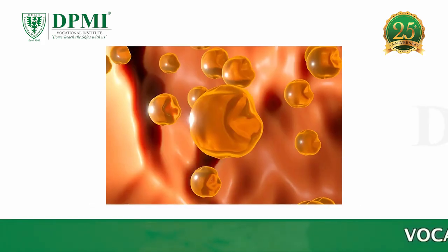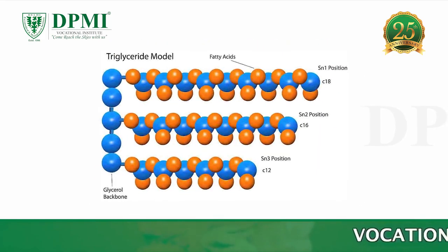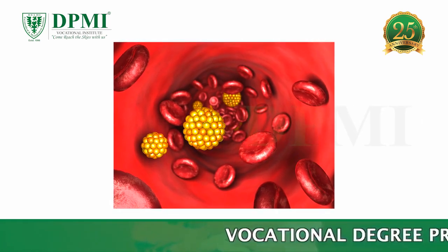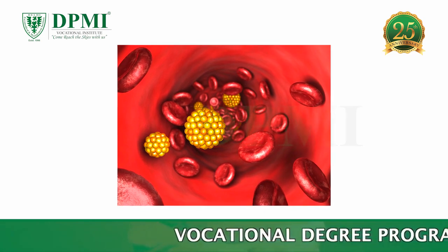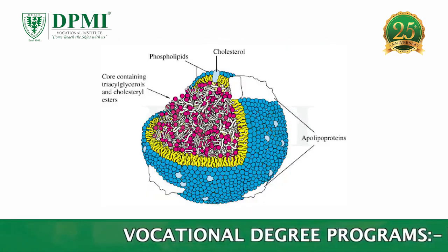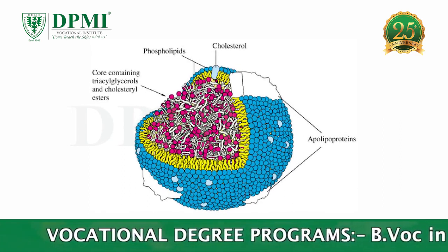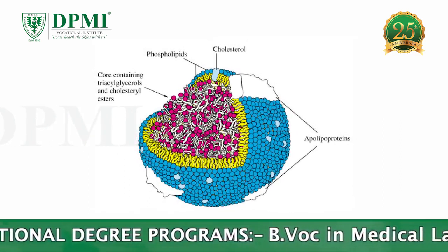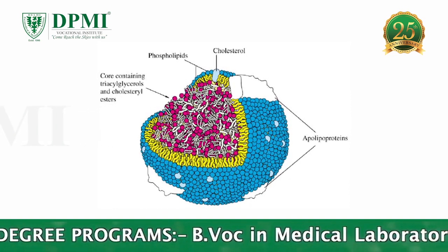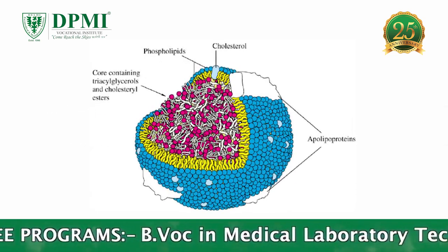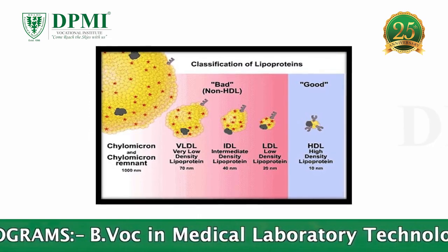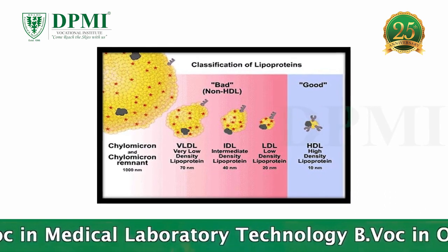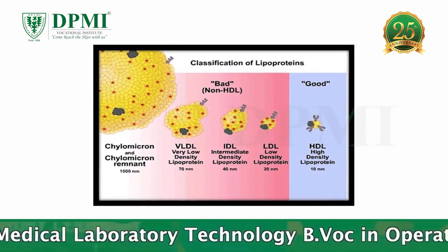Lipoproteins: cholesterol and triglycerides are insoluble in water, and therefore these lipids must be transported in association with proteins in the circulation. Lipoproteins are complex particles with a central core containing cholesterol esters and triglycerides, surrounded by free cholesterol, phospholipids, and apolipoproteins. Plasma lipoproteins can be divided into 6 classes based on size, lipid composition, and apolipoproteins.